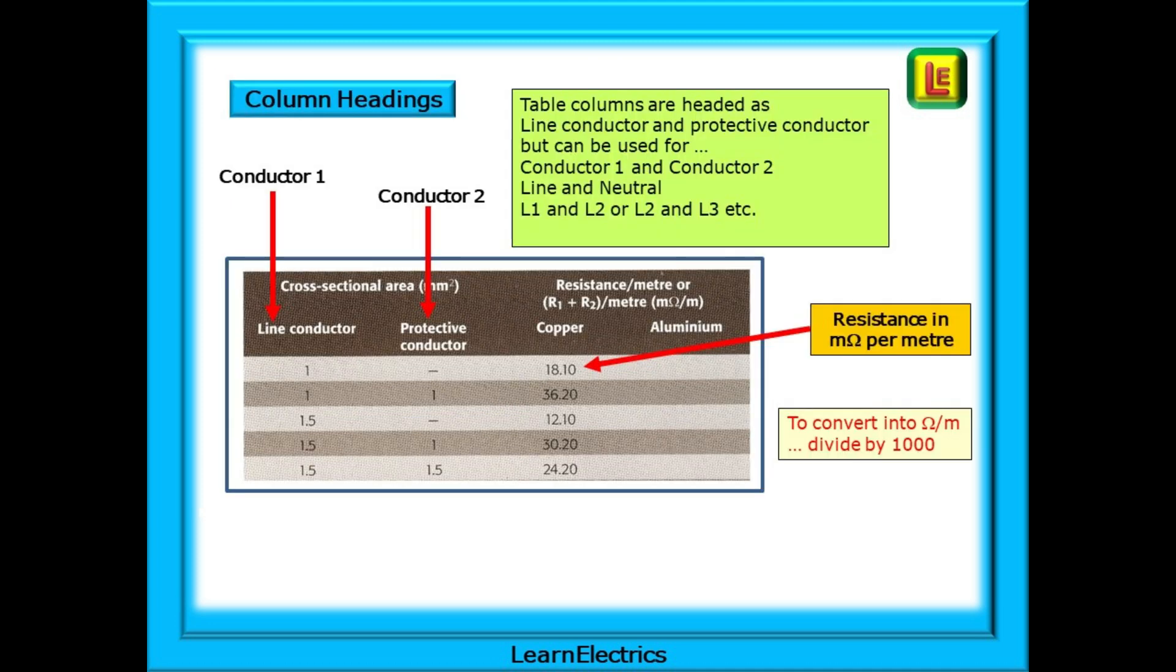Start by looking at the headers for the table. Table columns are headed as line conductor and protective conductor in the table but the headings can be used for conductor 1 and conductor 2 if you are not testing a protective conductor or earth. You can use them for line and neutral or L1 and L2 or L2 and L3 etc in a three-phase system. The resistance values shown in each row of the table is in milli-ohms per meter, thousandths of an ohm per meter length of the conductor.